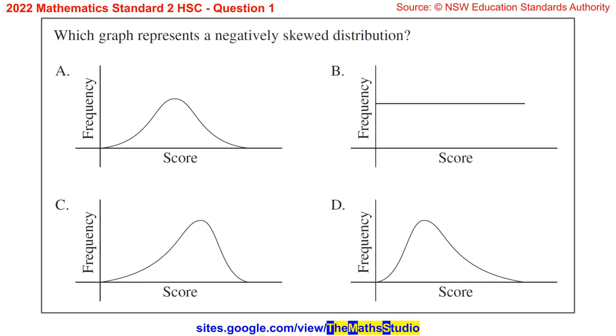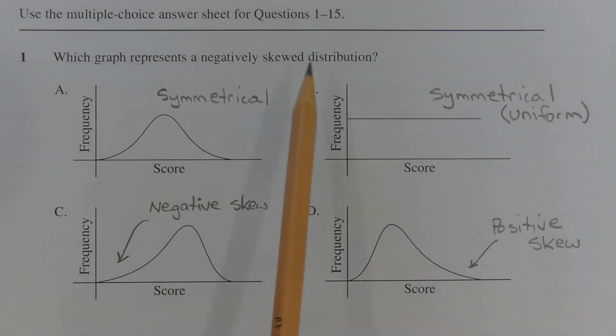Question 1. Which graph represents a negatively skewed distribution? A distribution is skewed if one tail is longer than the other. Let's consider the options in turn.